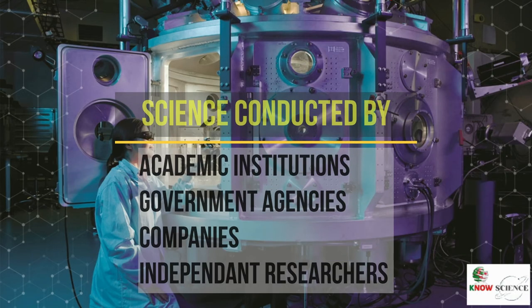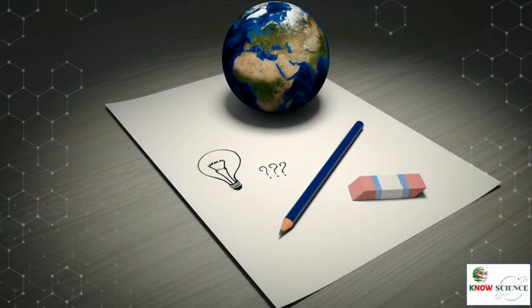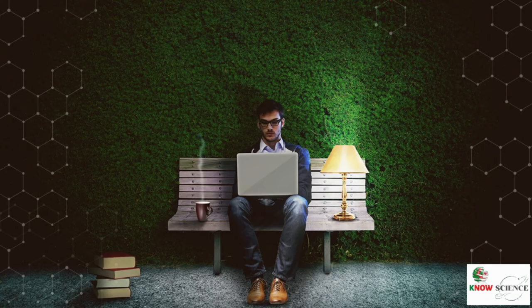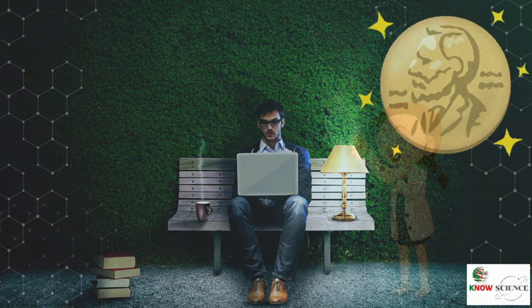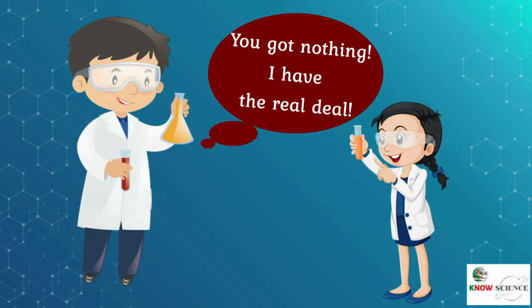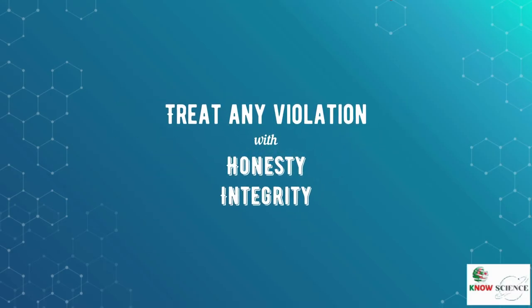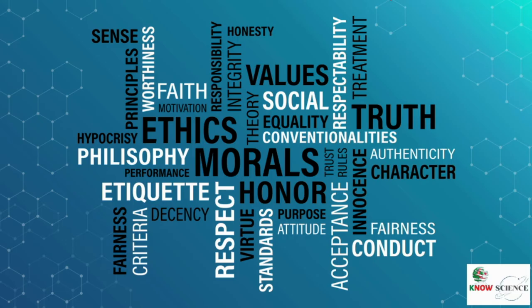Research in science is commonly conducted in academic and research institutions, as well as in government agencies, companies, non-profit organizations, and by independent researchers. Scientists exhibit strong curiosity about reality, with some having a desire to apply scientific knowledge for the benefit of health, nations, environment, or industries. Other motivations include recognition by peers and prestige, such as receiving the Nobel Prize. Scientists try to uncover the real workings of the natural world, and that requires honesty — you can't get to the truth by exaggerating results, fudging numbers, or interpreting evidence in a biased way. Scientists have a great responsibility to spread a culture of science based on honesty, integrity, and objectivity.